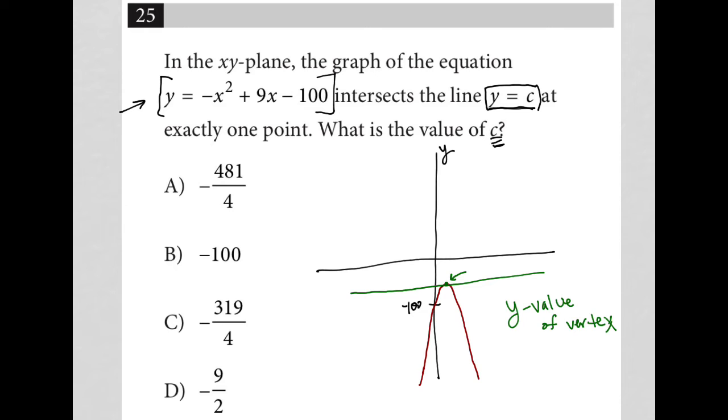So on Desmos, you'd be able to find exactly where that point is. What I see on my side, on my laptop that I have opened up to Desmos, is that the y value there is equal to negative 79.75 as a decimal.